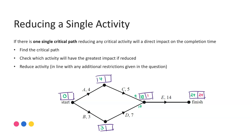Working backwards to get our critical path and identify those critical activities: 10 minus five (C) gives five, minus four (A) moving back to one. Going back, 10 minus seven (D) gives three, minus three (B) gives zero — meaning zero in the box there. So my critical path would be B, D, E. If I'm going to reduce one activity on that critical path, my options are B, D, or E.